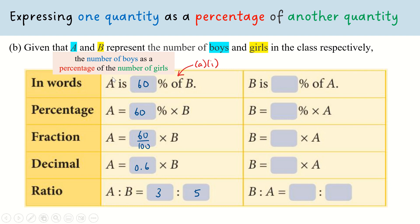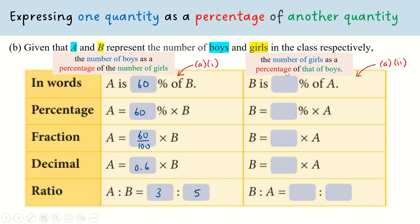If you have understood the first column, I urge you to try the second column, where we look at the number of girls (B) as a percentage of the number of boys (A) — that is, our answer from part 2 earlier. Please pause this video and give it a try before checking the answers.